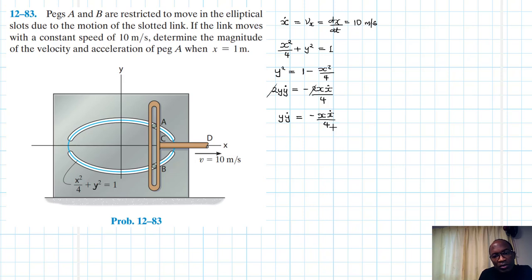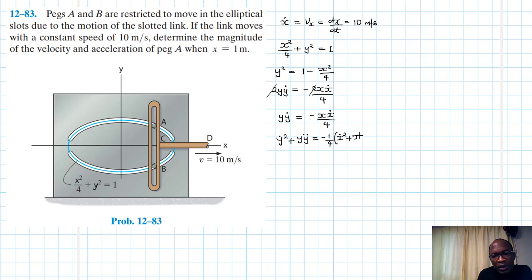Now let's work out the second time derivative. Here we have the product rule on both sides. This becomes ẏ² plus y·ÿ equal to minus one quarter times (ẋ² plus x·ẍ).